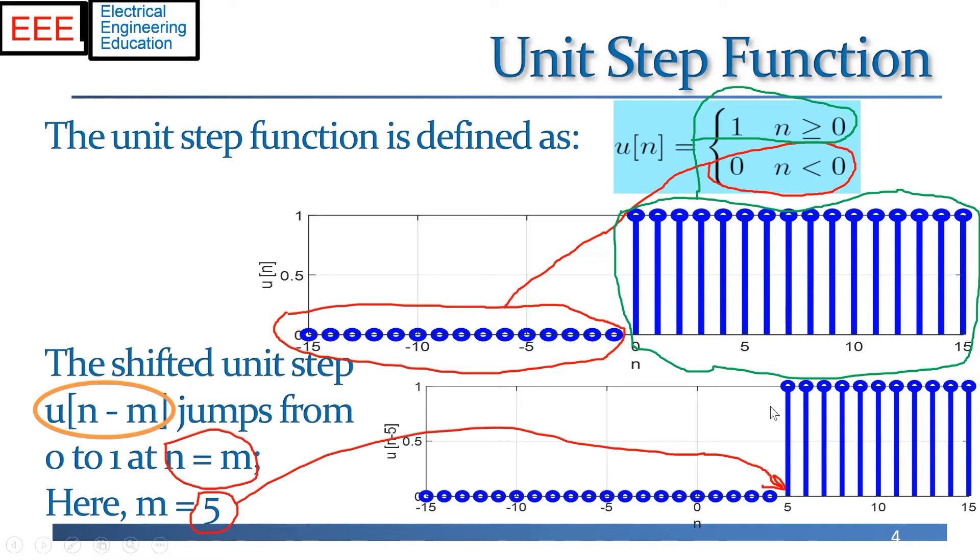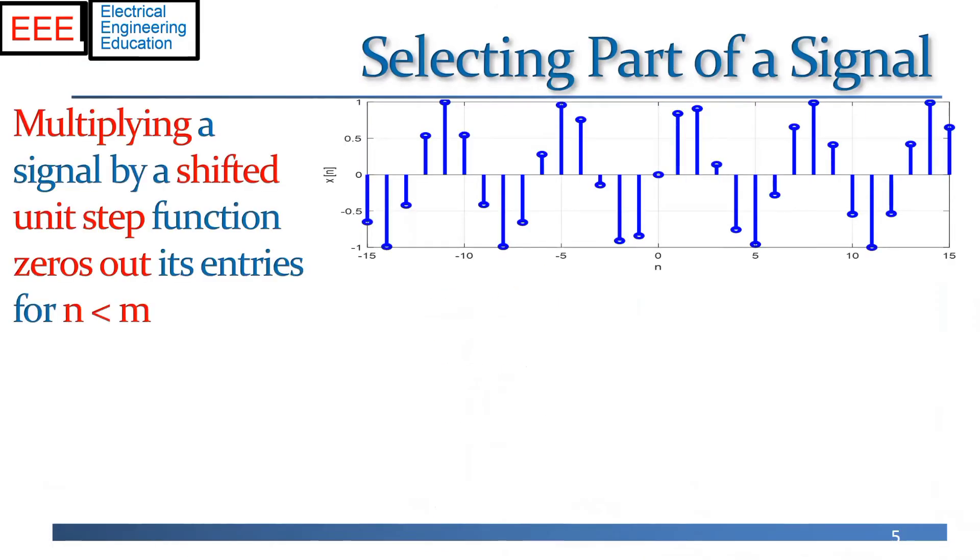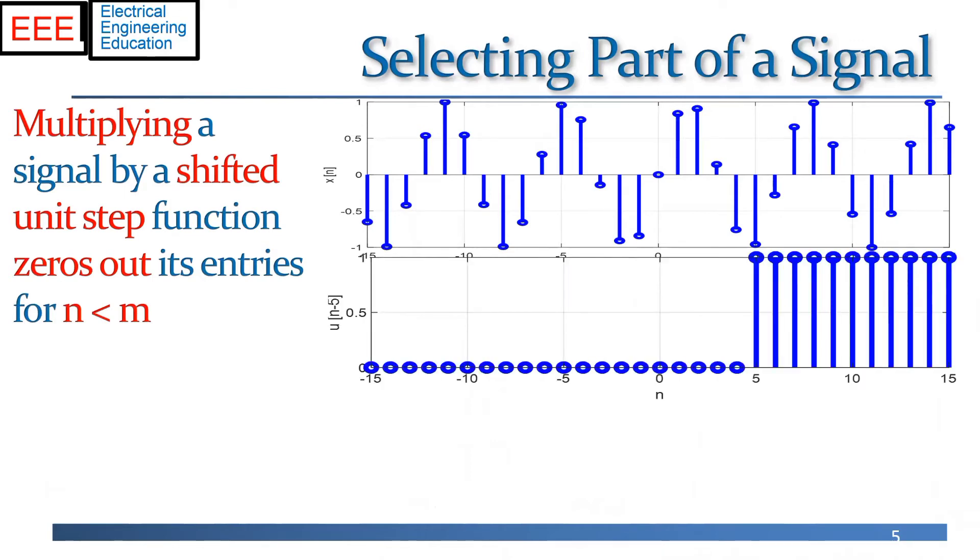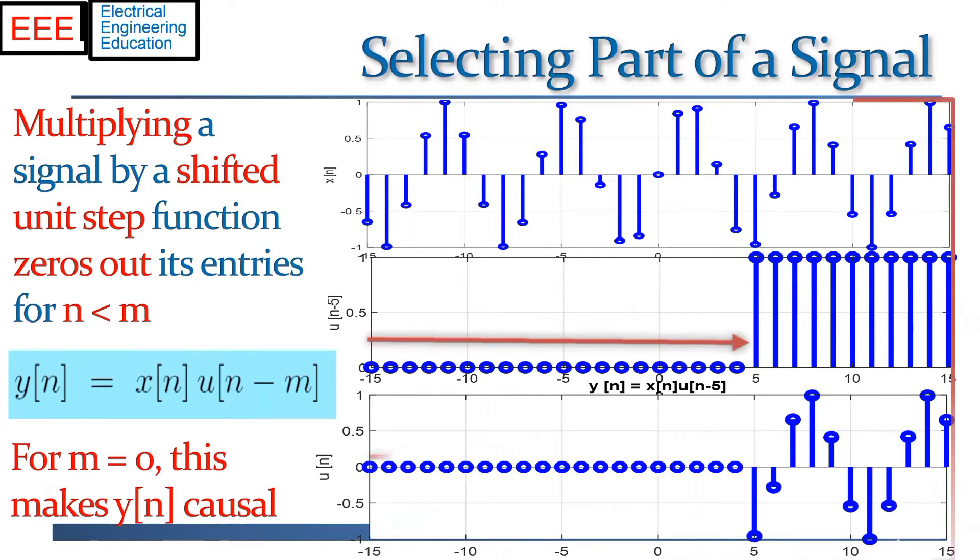And a simple example, here's my signal x of n. And we multiply by a unit step, in this case with m equals five. So we've shifted it by five units. Now when we multiply x by this shifted unit step, we see we're going to get an output signal that is zero for times up to n equals plus four. And then it equals the signal x of n for time points five and greater. So this selects out a part of the signal.